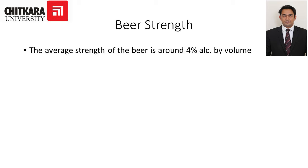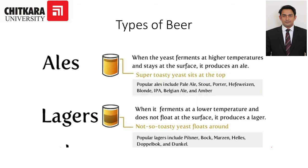Basically there are two types of beer: ales and lagers. When the yeast ferments at a higher temperature and stays at the surface, it produces an ale. These are super toasty and yeasty in nature. Popular ales include pale ale, stout, porter, blonde, IPA, Belgian ale, and amber ales.